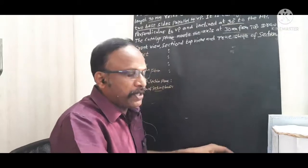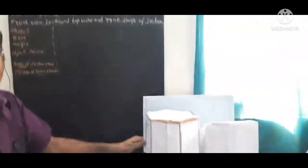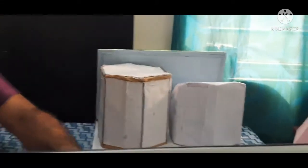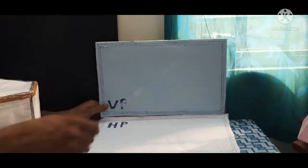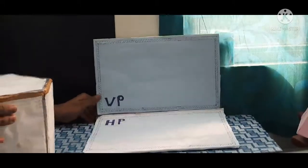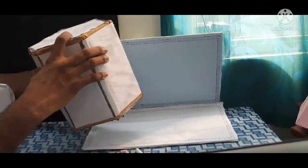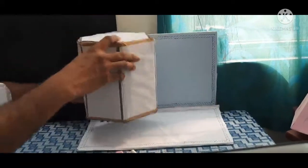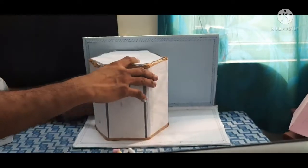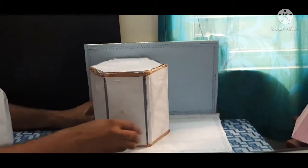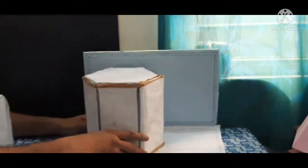Now I will give a demonstration for your understanding. This is the hexagonal prism. These are the principal planes, HP and VP. This is the axial external position. We are placing the object on HP such that two of its base sides are parallel to VP — like this. This is the position given.